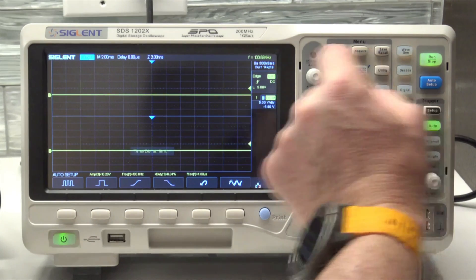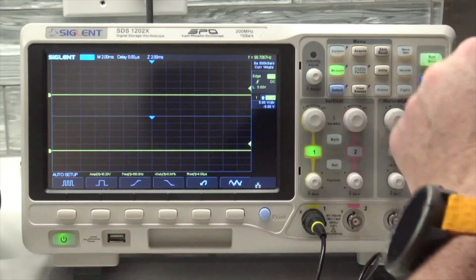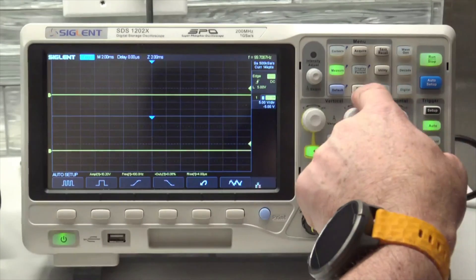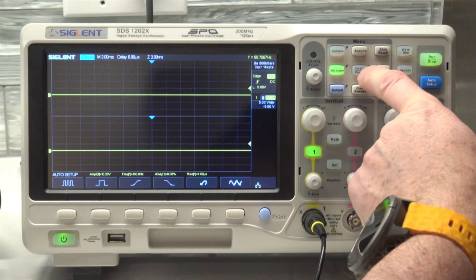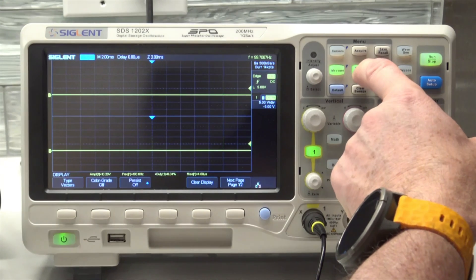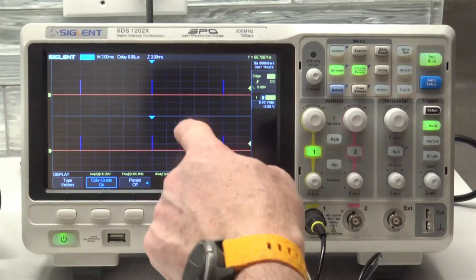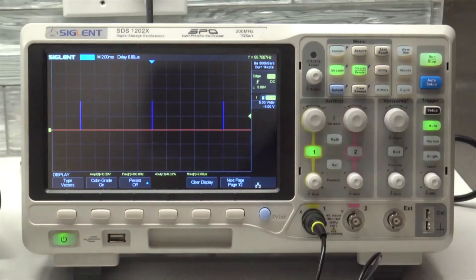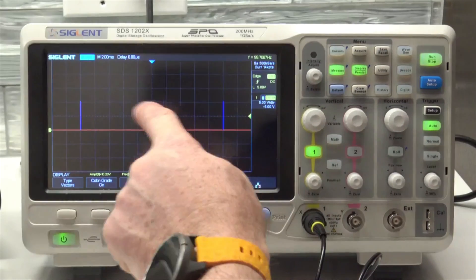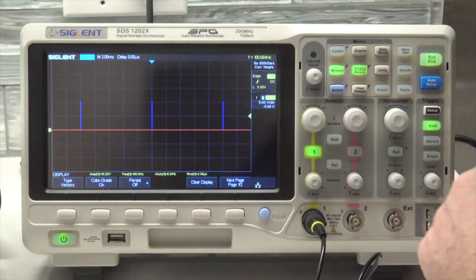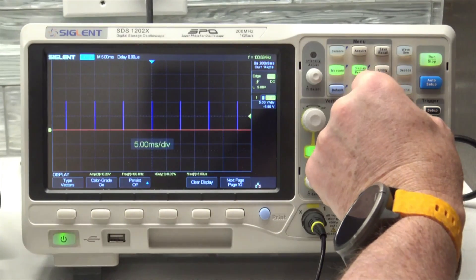When you're having a hard time seeing these little waveforms, one way to make it easier is to come to your display button and turn on your color grading. Now you can see blue, blue, blue, and our red line, and I can see more pulses.